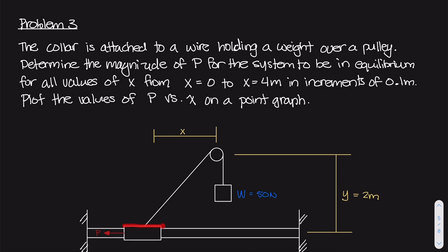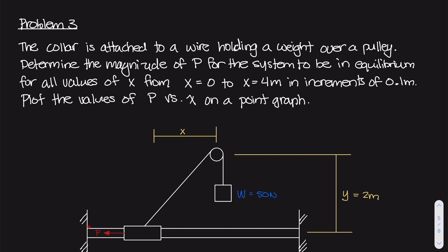Into this bar, we have this little collar that's able to slide left and right. So this collar can go this way or that way, and it can move freely anywhere from end to end. Attached to this collar is a wire or some sort of rope that goes up and over a pulley. On the other side of that rope, there's a weight that weighs 50 newtons. The collar is not going to move up or down because of the bar — the bar keeps the collar on that track only.